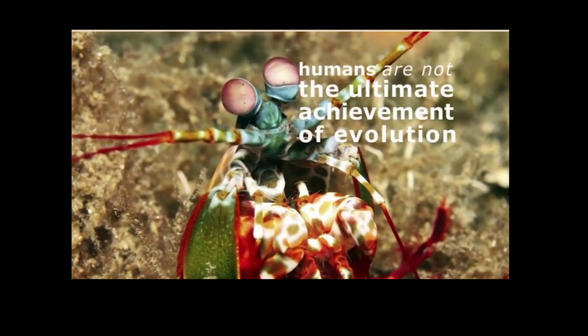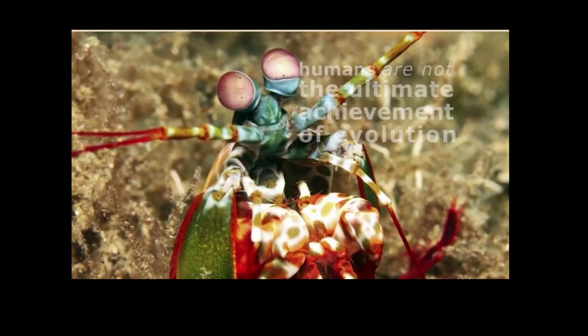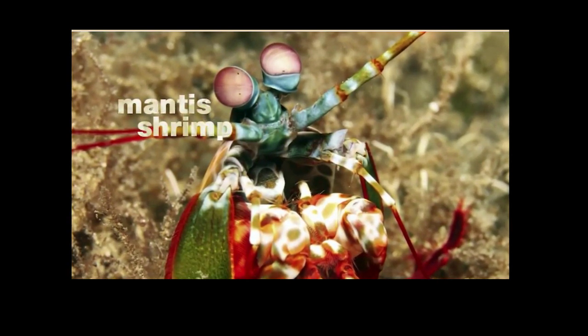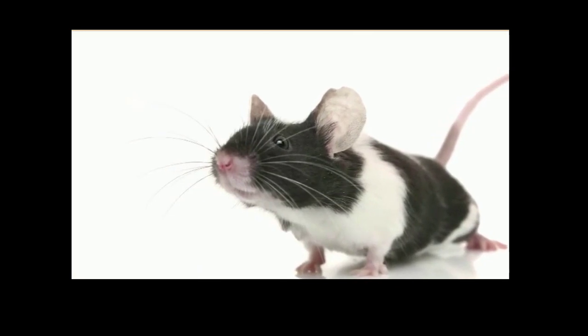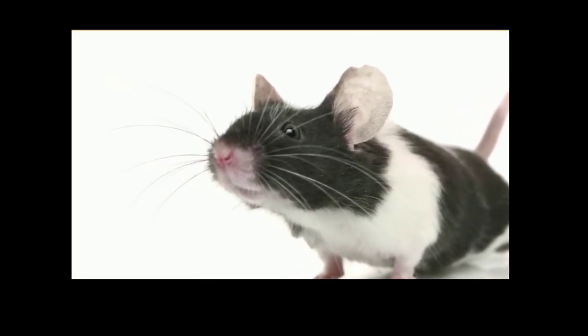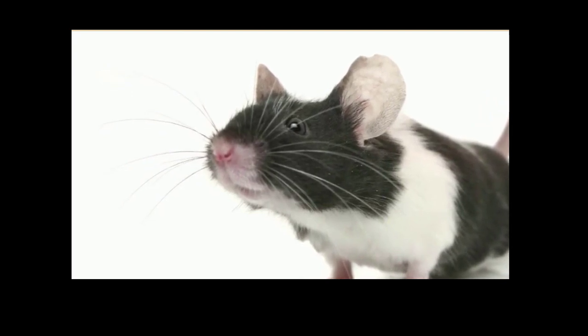Humans are not the ultimate achievement of evolution. Humans are less complex than other organisms in many ways. Birds can see more colors than we can, and the mantis shrimp can see polarized light, an adaptation that allows it to view its transparent prey. Mice can detect more smells than we can. They have about 1,400 different smell receptors, while humans only have about 400.